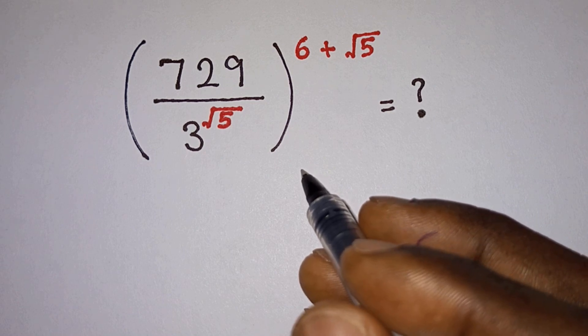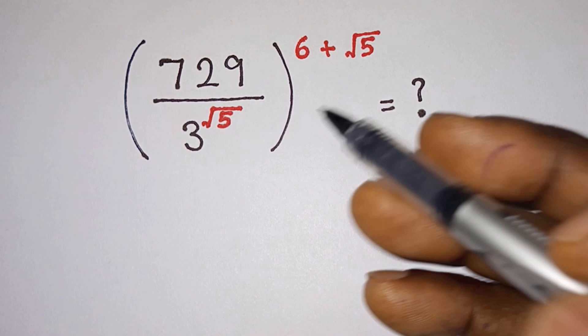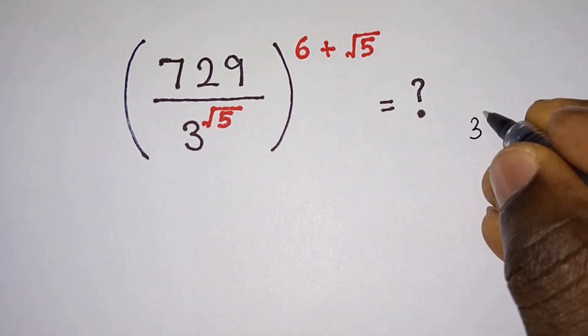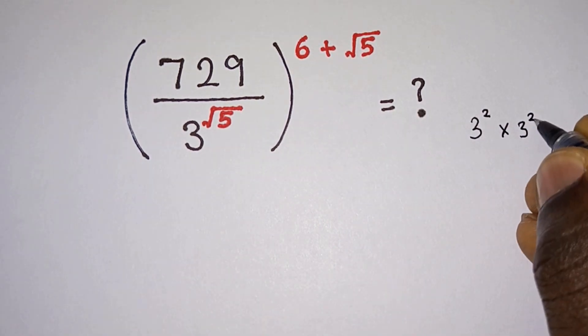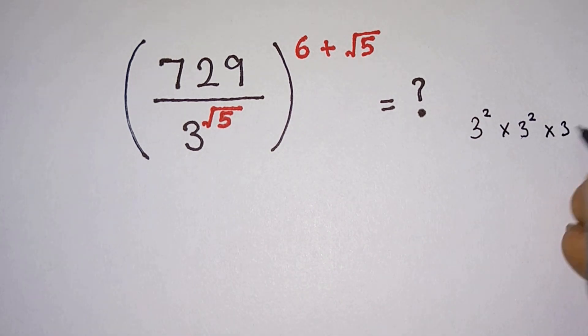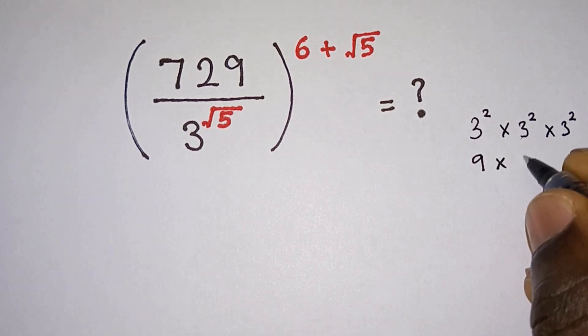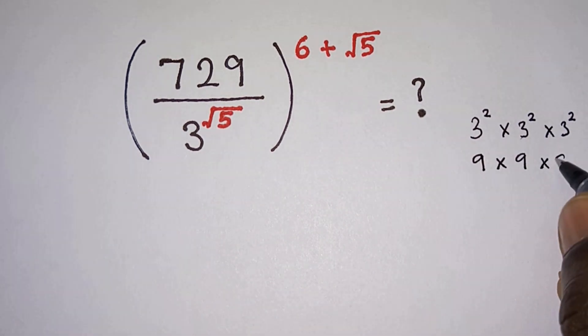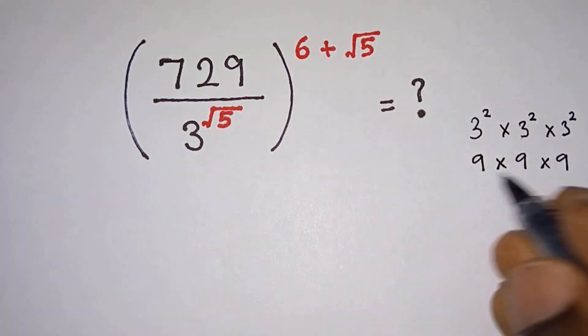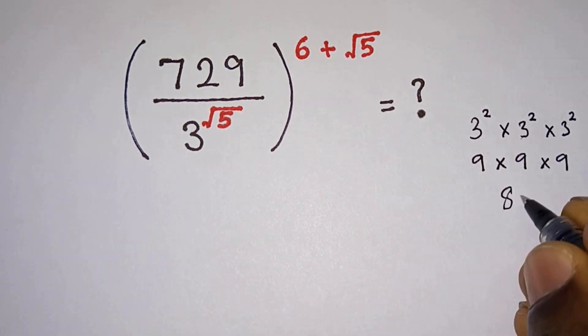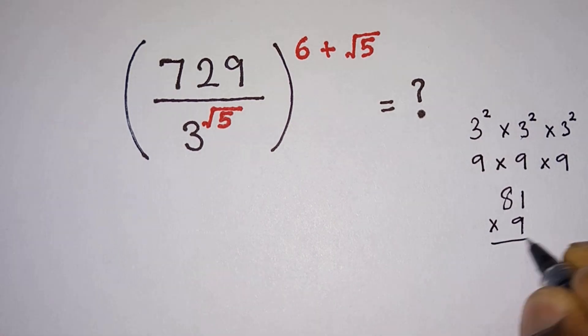Now let's get started. First of all, let's consider 729: 3 to the power 2 times 3 to the power 2 times 3 to the power 2. 3 to the power 2 is 9, so we would have 9 times 9 times 9. 9 times 9 is 81. 81 times 9, we're gonna have 729.